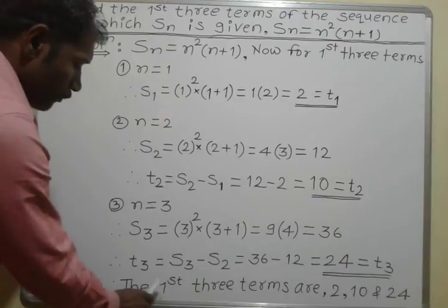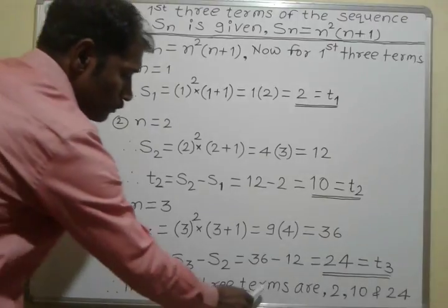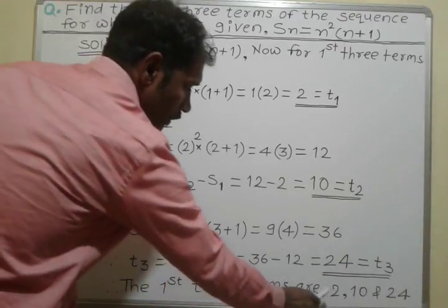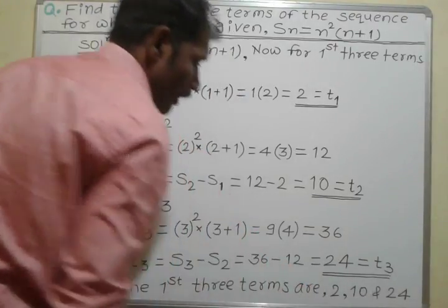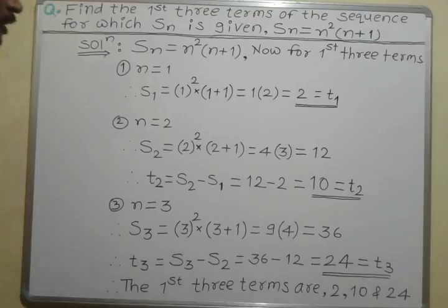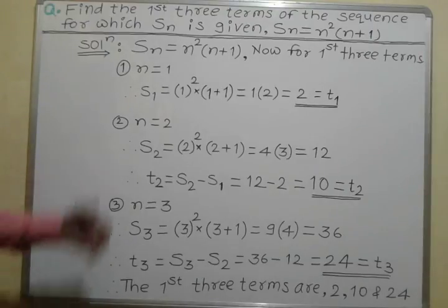Therefore, the first three terms are 2, 10, and 24. This is our answer for this example.